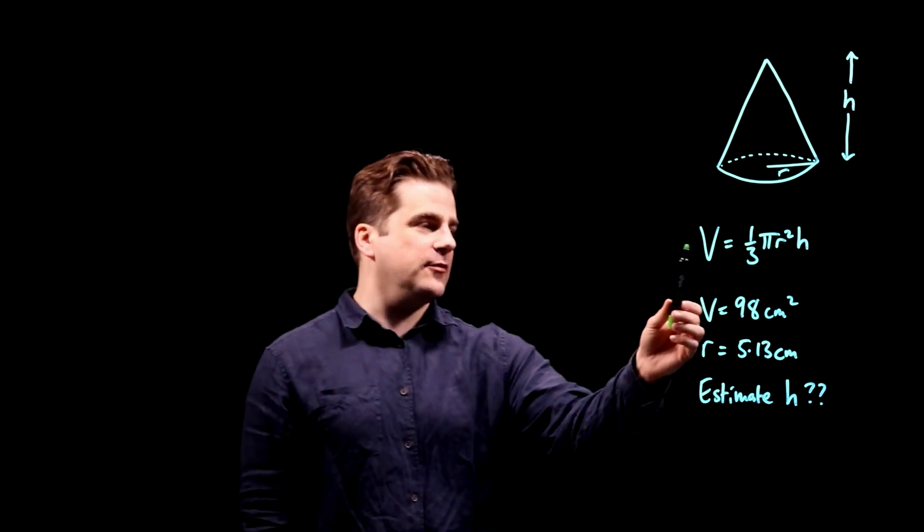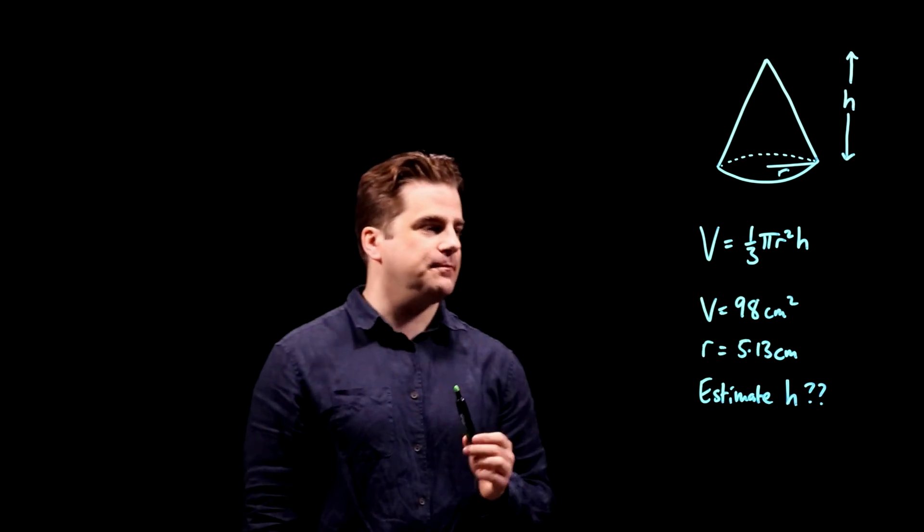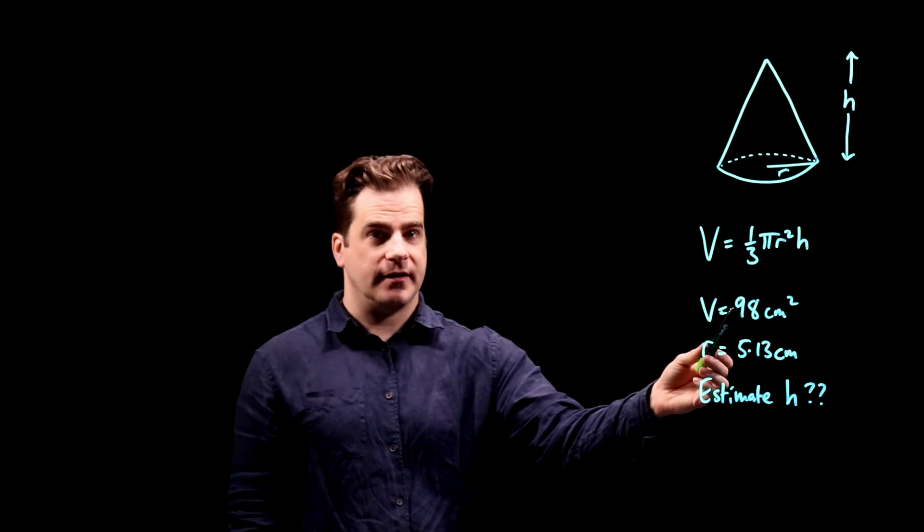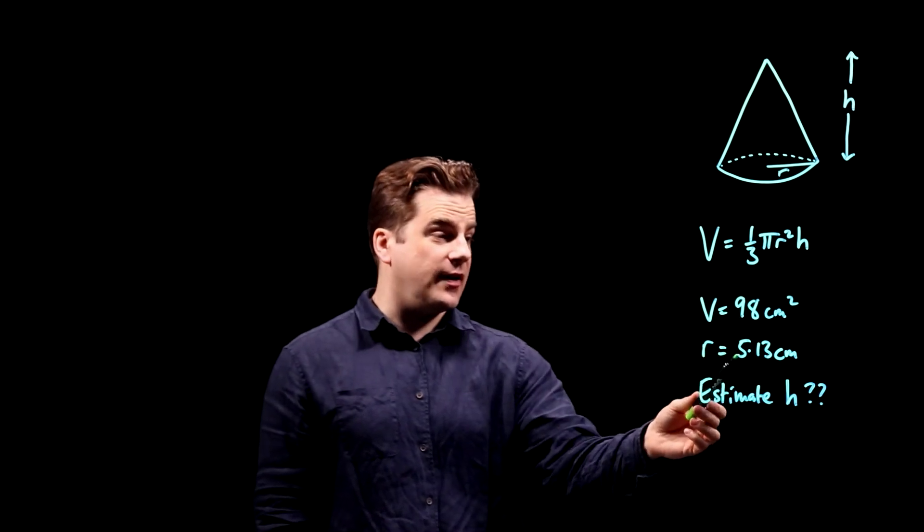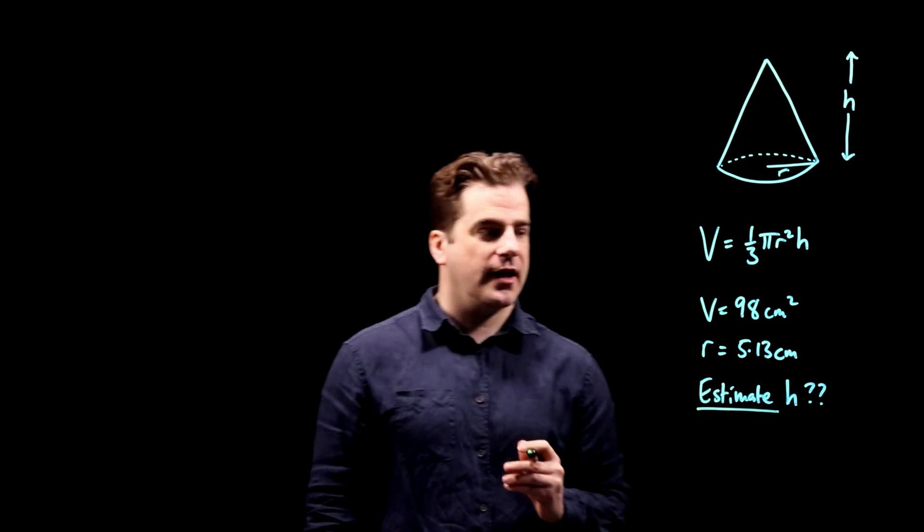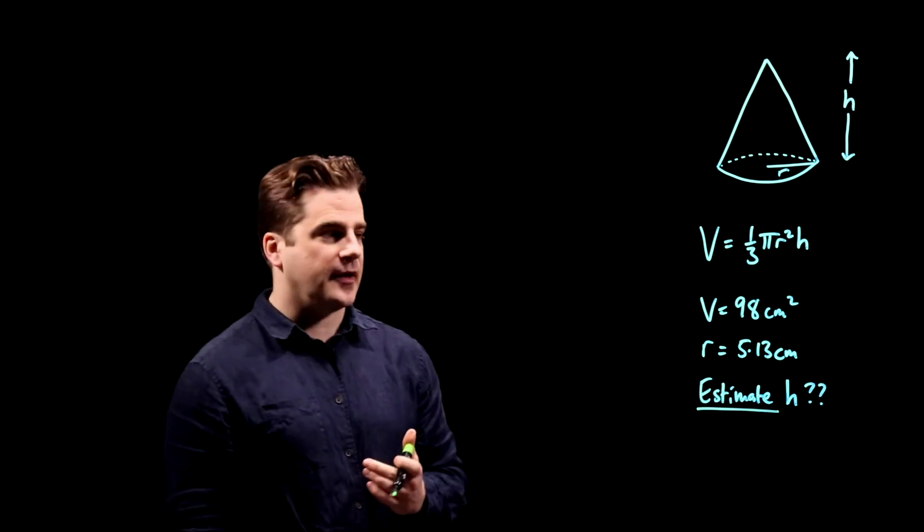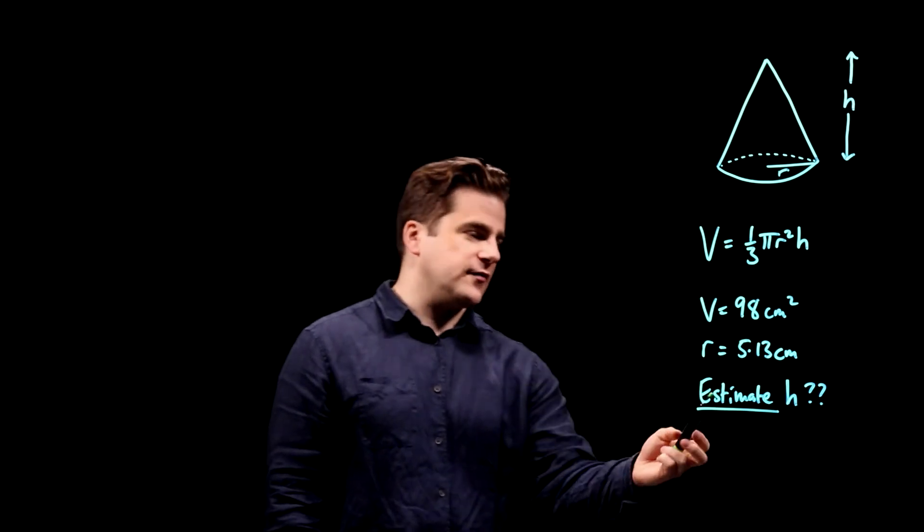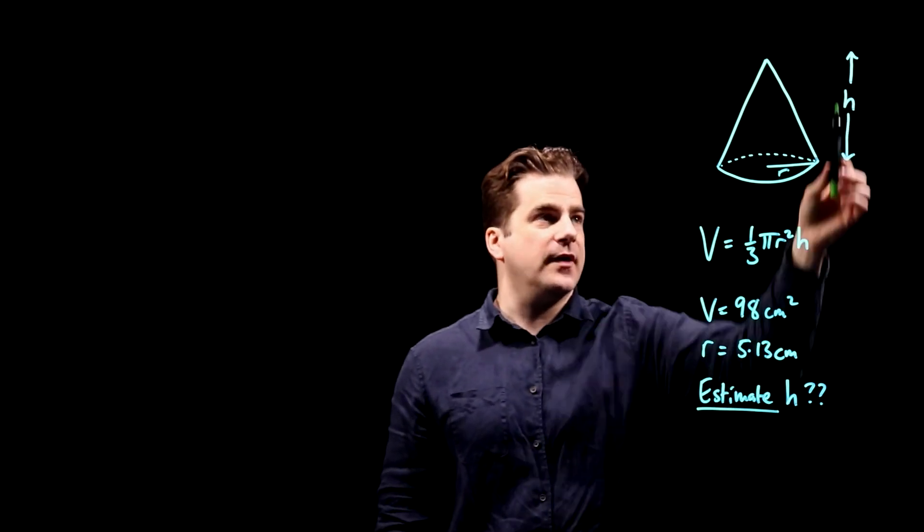Volume of a cone is one third pi r squared h. They tell us the volume is 98 cm cubed, the radius is 5.13 centimeters, and we have to estimate, not calculate, if this is a non-calc paper, we have to estimate h, the height of the cone.